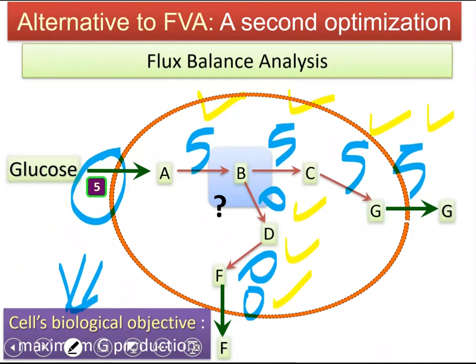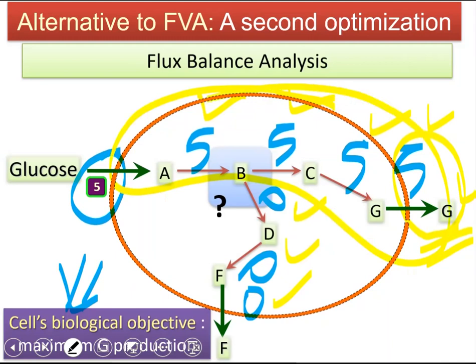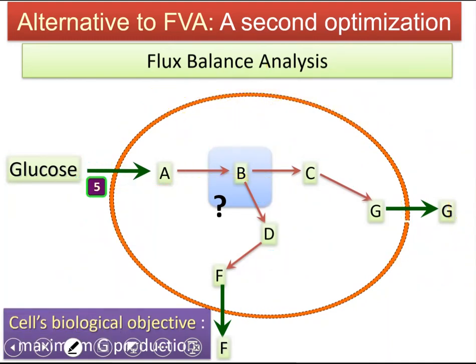If you use another objective function, you will get another solution. Choosing a correct objective function is really important. In this scenario where we maximize G, we don't have any flux variability — if the objective function is maximization of G, all the fluxes have to be 5. There is no other way if G is to be produced in 5 units. But metabolic networks are much more complex than this.